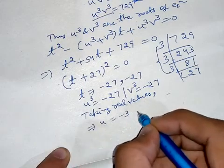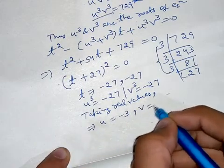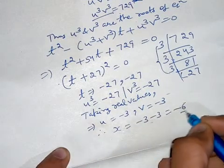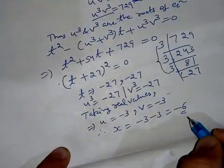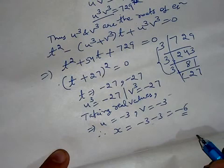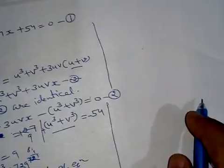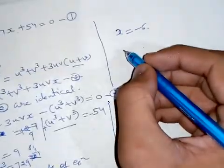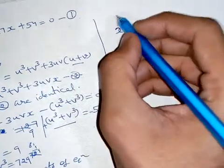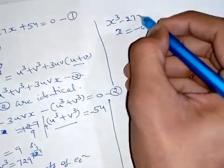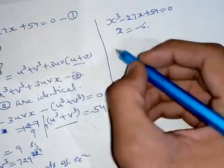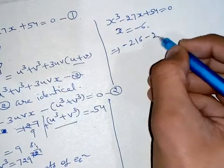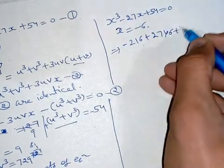Taking real values: u equals minus 3 and v equals minus 3. Therefore x equals u plus v equals minus 3 plus (minus 3) equals minus 6. So x equals minus 6 is a root. Verifying in x cubed minus 27x plus 41: minus 216 plus 162 plus 41... let me check — minus 216 minus (minus 27 times minus 6) plus 41.